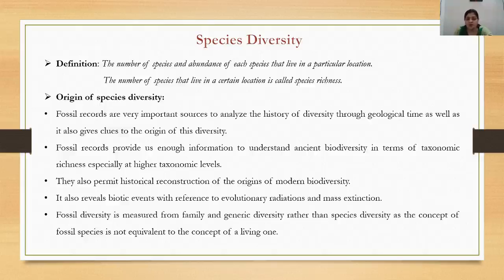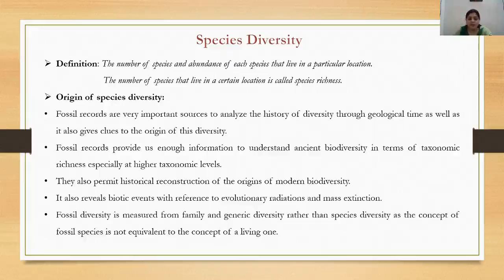Fossil records are helpful for understanding what plants were present in ancient times and also permit historical reconstruction of the origins of modern biodiversity. They reveal biotic events with reference to evolutionary radiations and mass extinction. Fossil diversity is measured at the family and genus level rather than species level, because the concept of a fossil species is not equivalent to the concept of a living species.